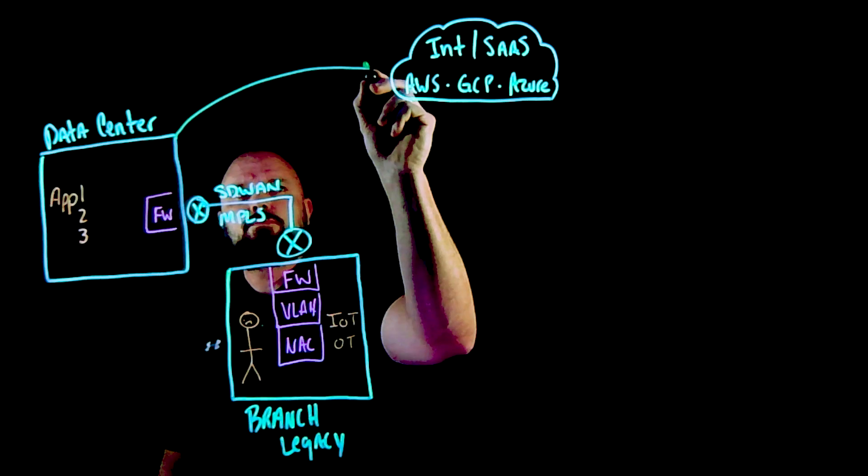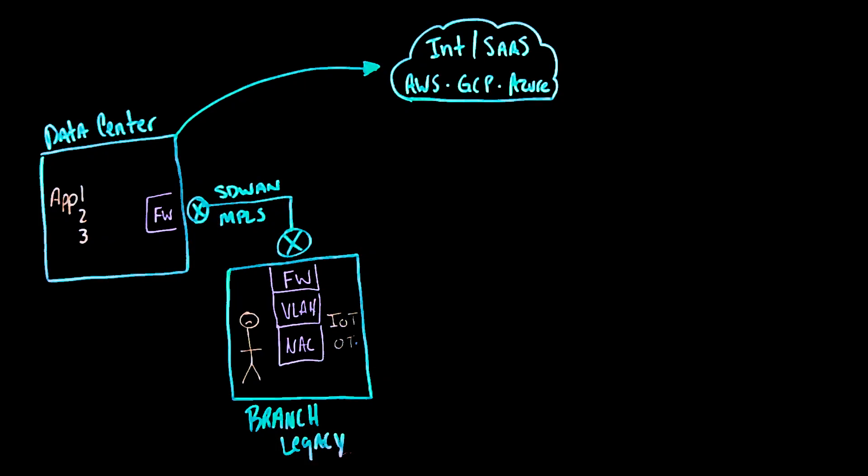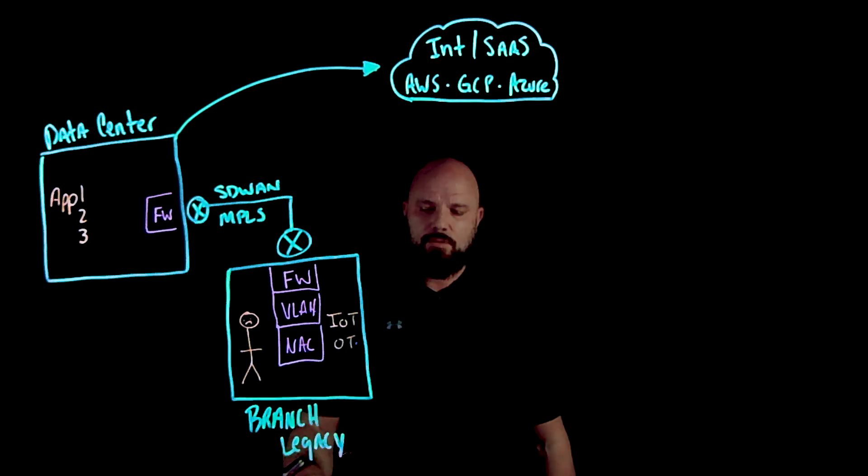When we look at this design, everything at the branch and the data center is kind of quote-unquote trusted, and everything outside of that was untrusted. We were doing this because we had to backhaul traffic from the branch to the data center to go out to the internet — it's anti-cloud at best. And of course you had to contend with lateral threat movement and ransomware, so you had to deploy VLANs and NAC. Those things are complex and expensive.